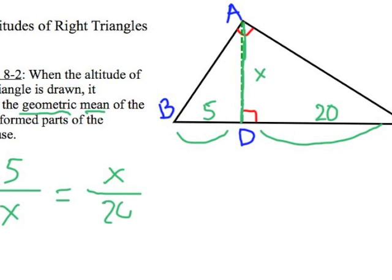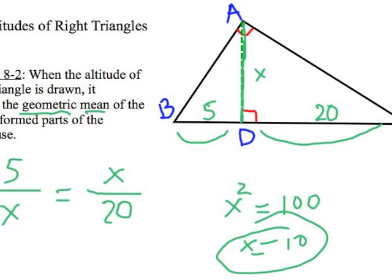Now we solve by cross-multiplying. X squared equals 100, and of course, X equals 10 when we find the square root.